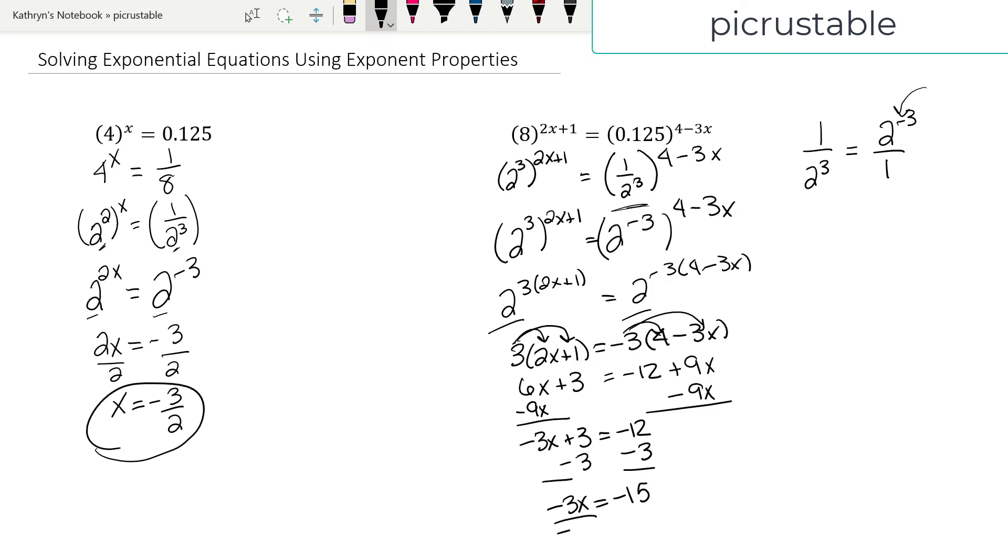And when I divide by negative 3, look at that, we get x equals 5. And when we substitute that in to check, that turns out to be our answer.